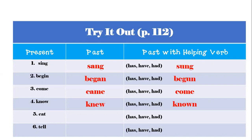Number four: 'know,' 'knew,' 'have/had known' — see the difference in spelling in both the past tense and past with helping verb. Number five: 'eat,' 'ate,' 'have/had eaten' — correct your paper if needed. Number six: 'tell,' 'told,' 'have/had told' — notice that for number six the past tense and past with helping verb are exactly the same. This is why there are no rules with irregular verbs — they vary and change. Double-check your paper and make any corrections.